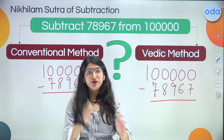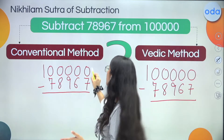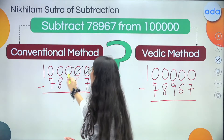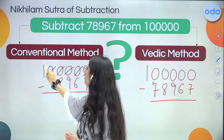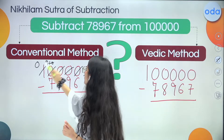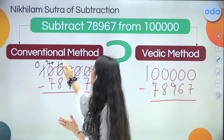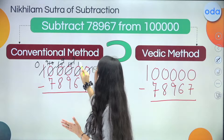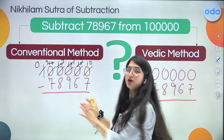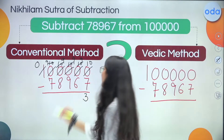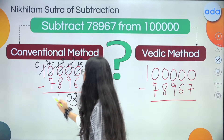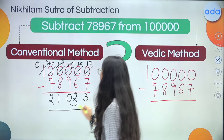With the conventional method we have to do borrowing. I start from here — my neighbor doesn't have anything, so this gets cut off, and again this gets cut off, this gets cut off, this gets cut off. Finally, one becomes zero, then it becomes ten, this gives one to the next, and we get: nine, ten, nine, ten, nine, and finally ten. See, there is a lot of mess created here — so much rough work to do. Now: 10 minus 7 is 3, 9 minus 6 is 3, 9 minus 9 is 0, 9 minus 8 is 1, 9 minus 7 is 2. We got the answer: 21,033.